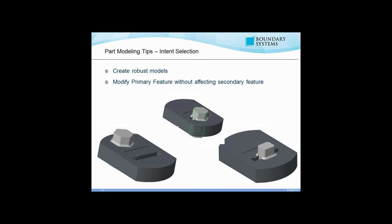In the screenshots shown, that post is moved into the pocket and the rounds are still there and regenerate successfully. Even when changing it from a hexagon to a square, the rounds still regenerate successfully — something you wouldn't typically expect when you change your geometry so drastically. But because you're using intent selection, it's much more robust.